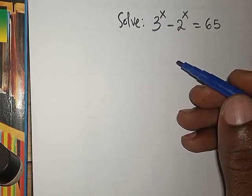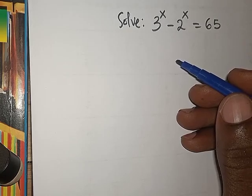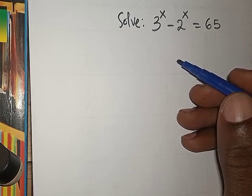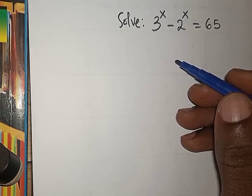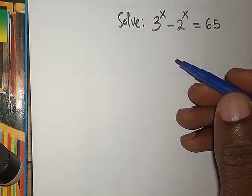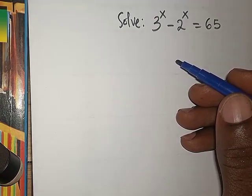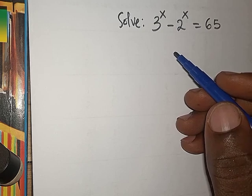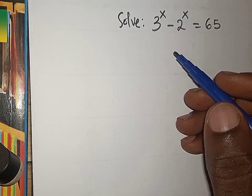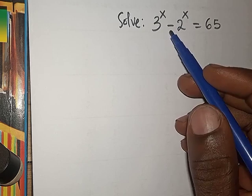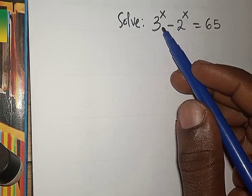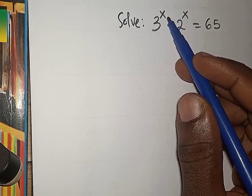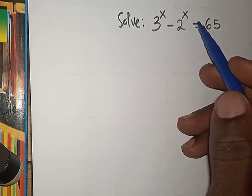Hello, good viewers, you are highly welcome. In today's tutorial, we are going to be solving this Math Olympiad question. This is our exponential equation — we are asked to find the value of x: 3^x minus 2^x equals 65.